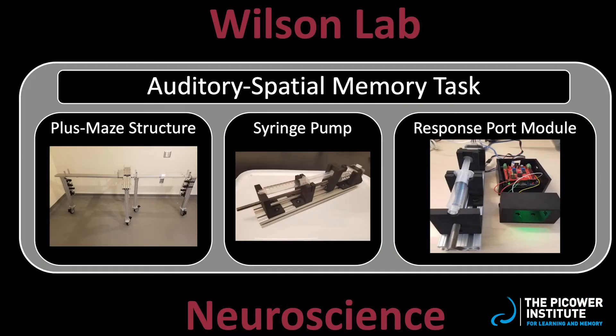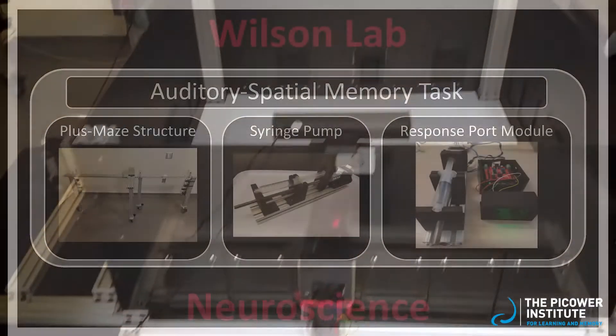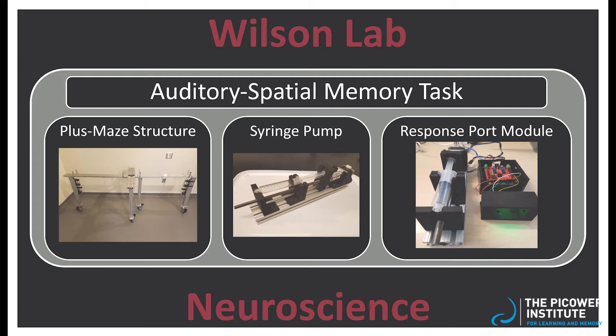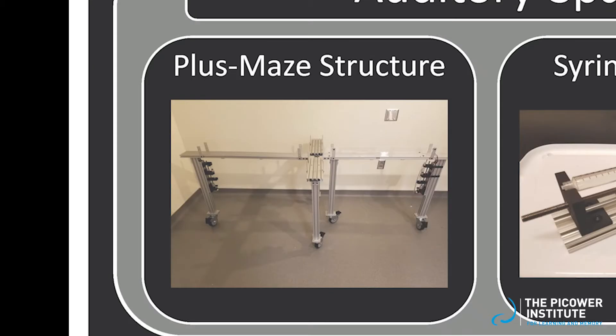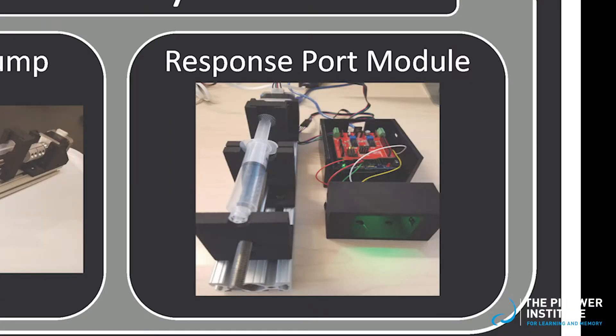In one project, I wanted to study how rats can learn the location of food based on sound cues. To do this, I designed and built an automated maze in the shape of a plus sign. A syringe pump, which dispensed a liquid food reward, and a response port module, which controlled the syringe pump as well as infrared sensors that monitored the rat's responses, were located at the end of each arm.